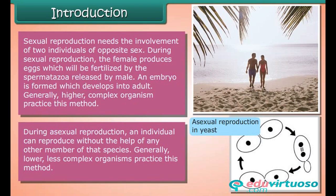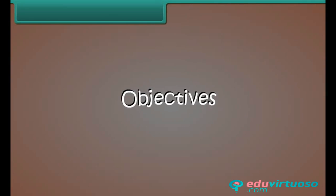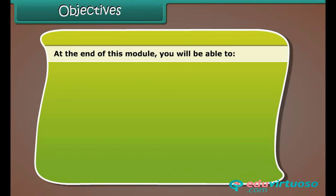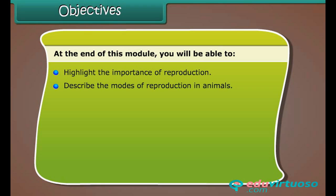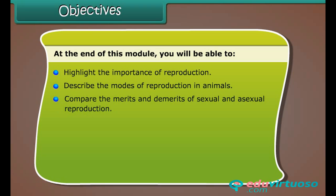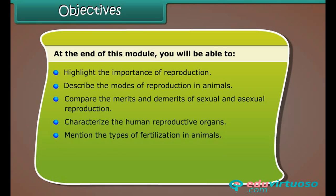During asexual reproduction, an individual can reproduce without the help of any other member of that species. Generally, lower, less complex organisms practice this method. At the end of this lesson, you'll be able to highlight the importance of reproduction, describe the modes of reproduction in animals, and compare the merits and demerits of sexual and asexual reproduction.